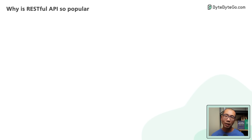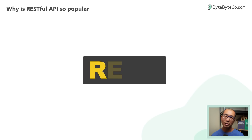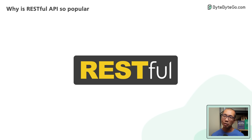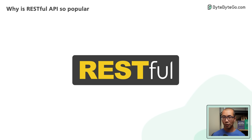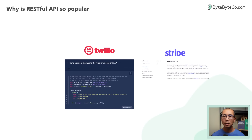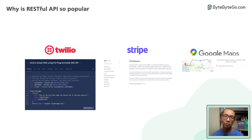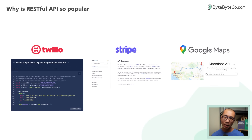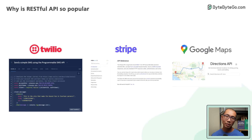An API that follows the REST standard is called a RESTful API. Some real-life examples are Twilio, Stripe, and Google Maps.